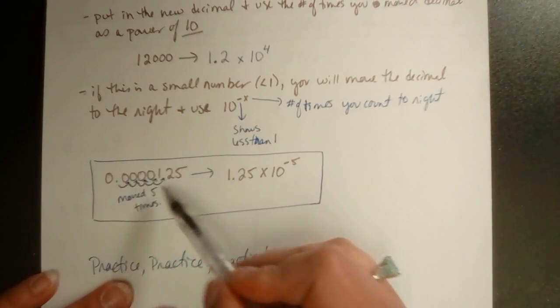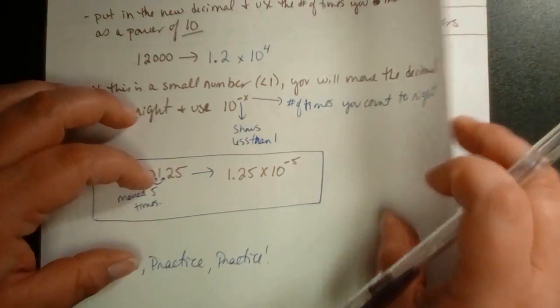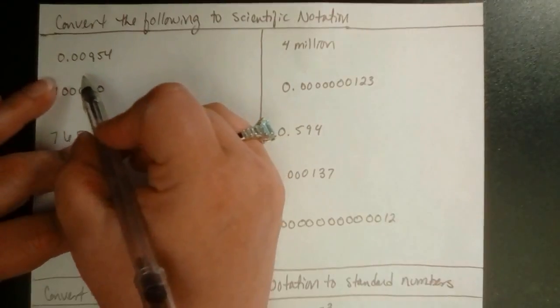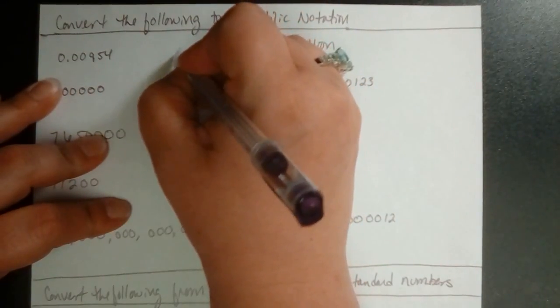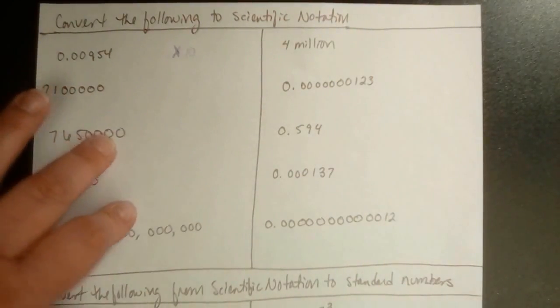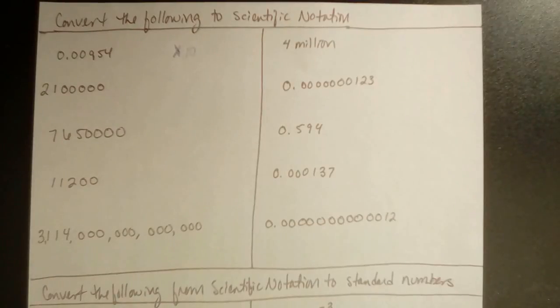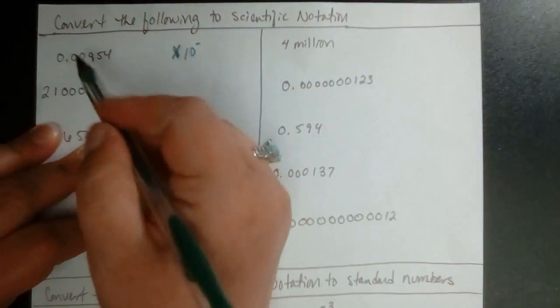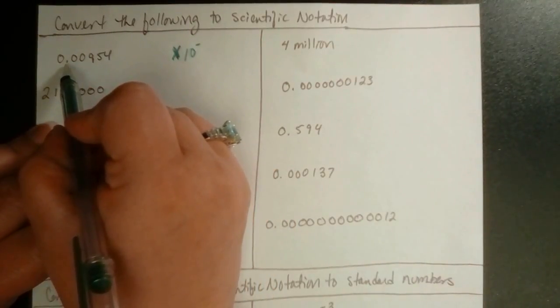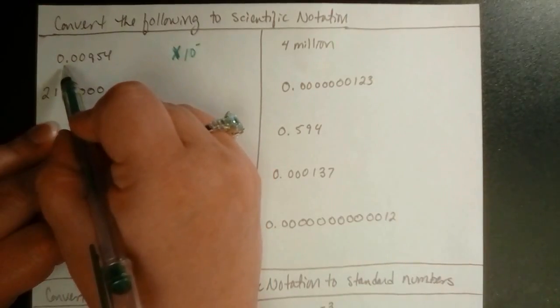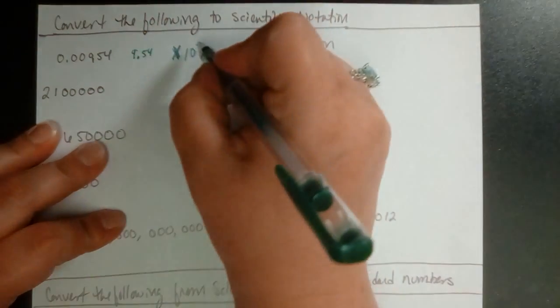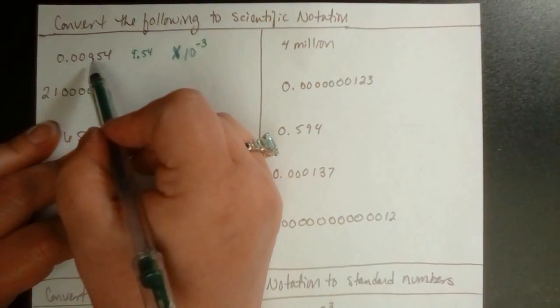Write down all of the pole numbers there and make sure you practice this. So, just so you can practice this, let's do some practice together. Here, this is going to be less than 1. So, we know we're going to have a times 10 to the negative. We're going to have a times 10 to the negative because this is less than 1, right? I'm going to move my decimal point so it's after that 9 and it's going to the right 1, 2, 3 times. So, this should be 9.54 times 10 to the negative 3 because I moved it 3 times to the right.